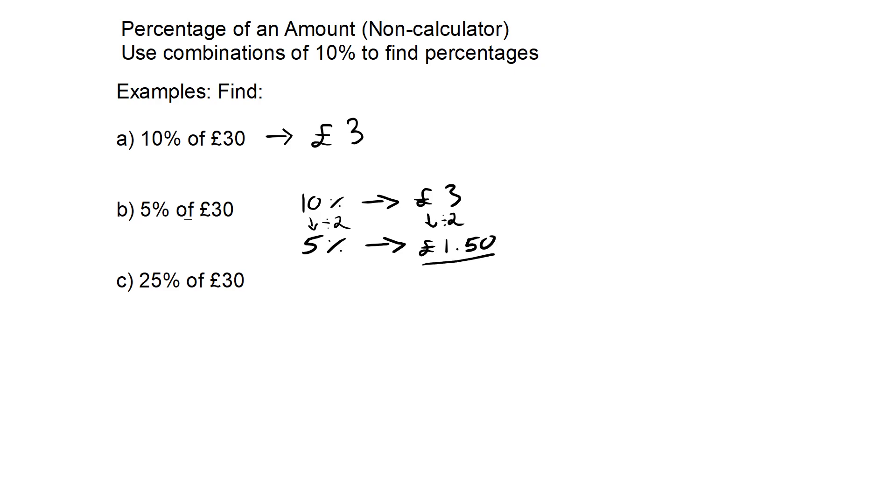For 25% of £30, there are multiple ways you can do this. We know that 10% is £3, so 20% is going to be £6. We also know that 5% is £1.50, so we could add up 20% and 5%, which gives us an answer of £7.50.